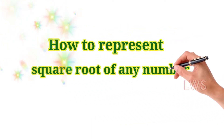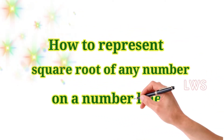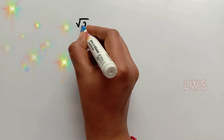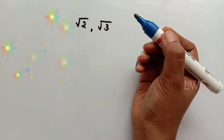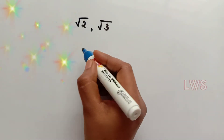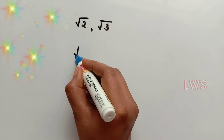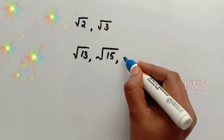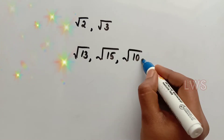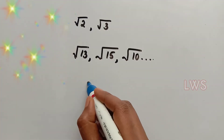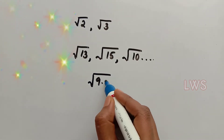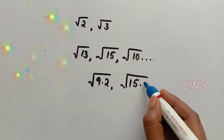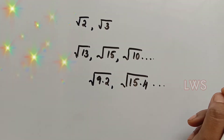Hello dears, welcome back. In the last video, we represented simple irrational numbers like root 2 and root 3 on a number line. Today we can learn how to represent the square root of any non-perfect squares like root 13, root 15, or square root of 10, or even decimal numbers like sqrt of 9.2 and sqrt of 15.4 on a number line.